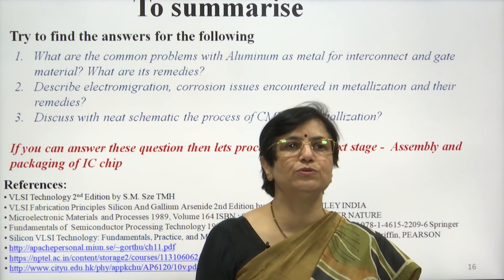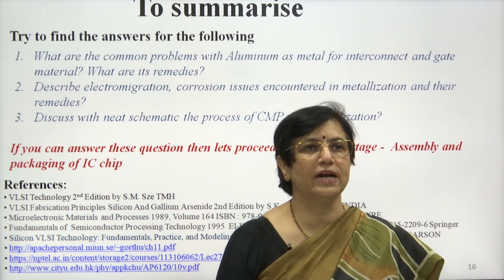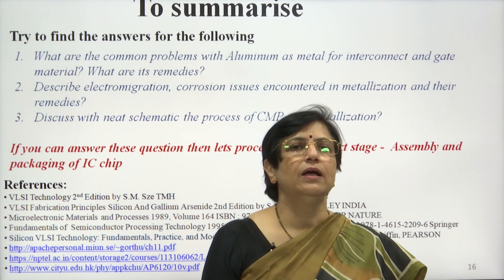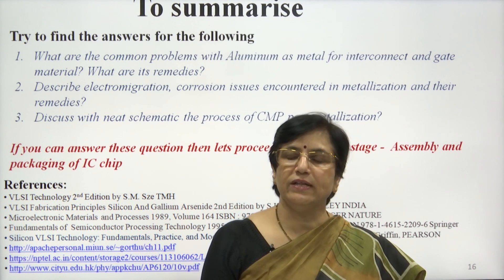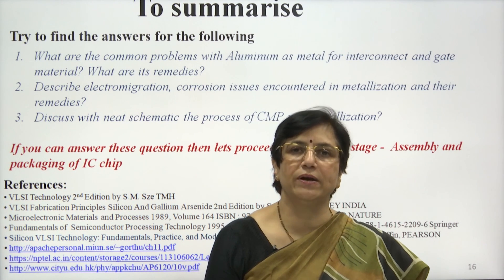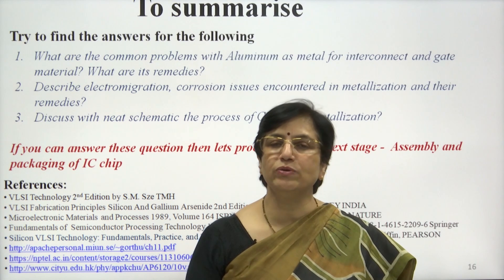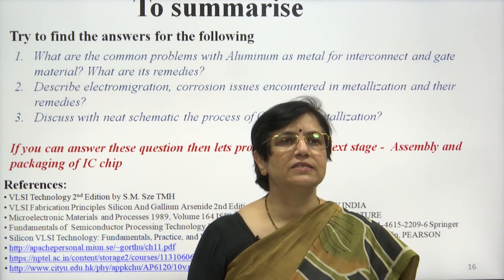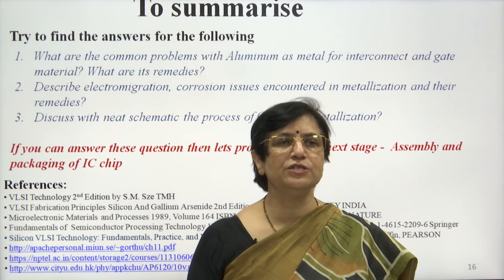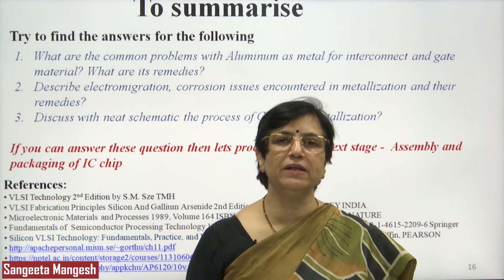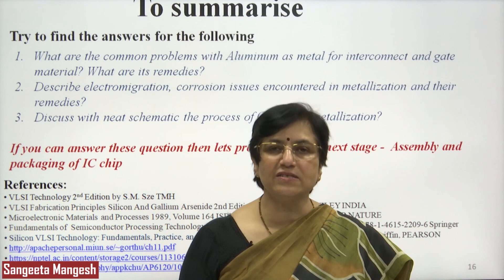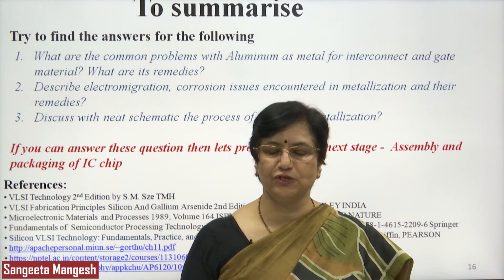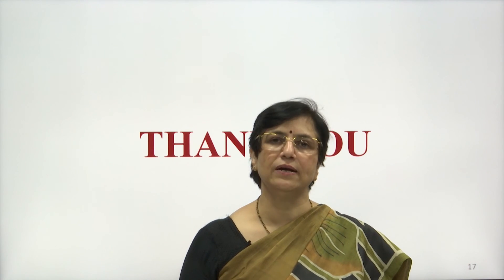At the end, to check your understanding, try to answer: What are the common problems in aluminum metallization and why it is not used for gate material or interconnects? What are the remedies? How do spikes form? How do hillocks form? How does grain boundary movement happen? Describe electromigration and corrosion issues encountered in metallization and their remedies. If metallization is clear, we will proceed to the next stage — assembly and packaging of the chip. Thank you, good luck, and God bless.